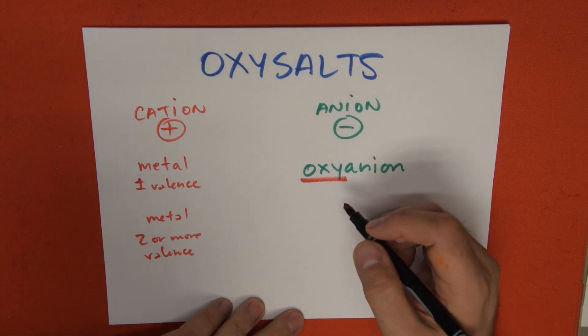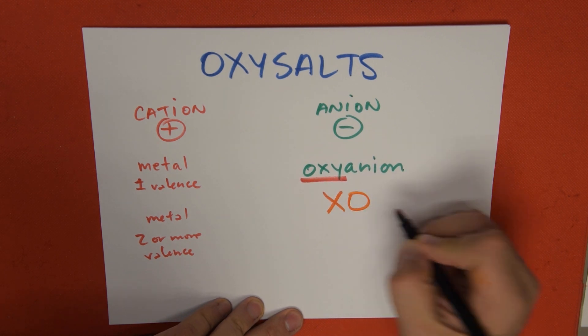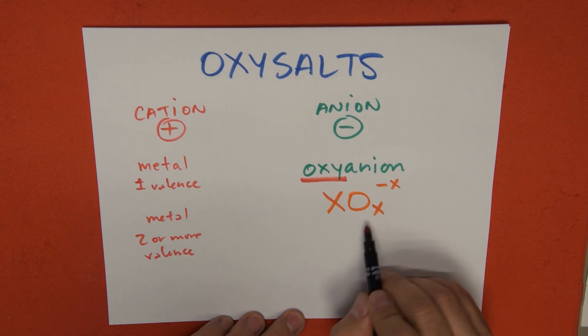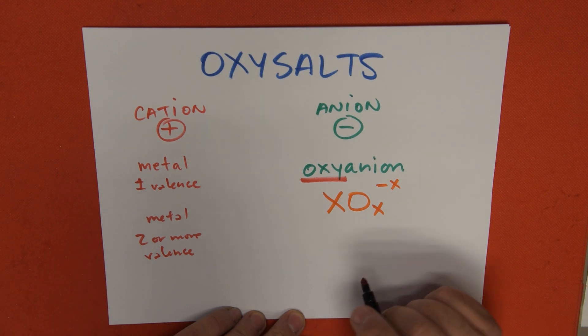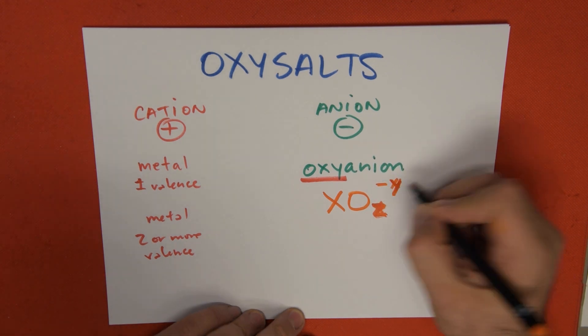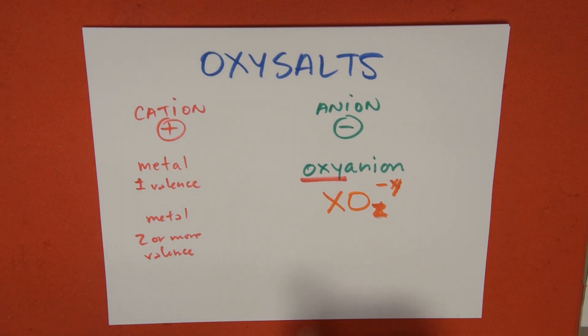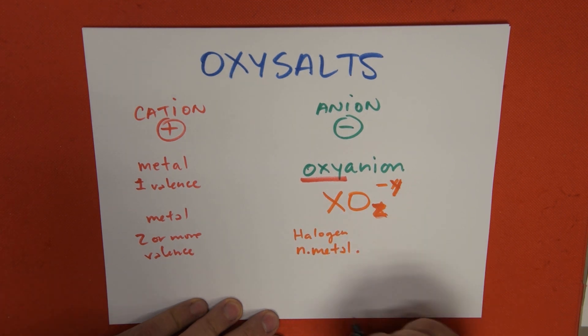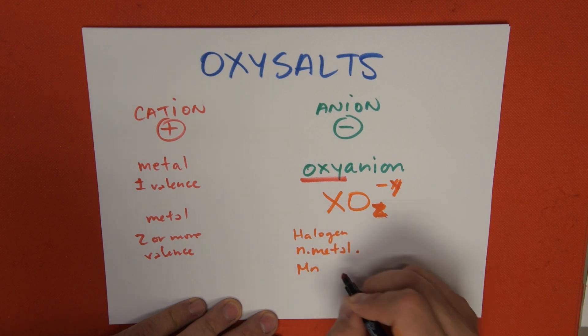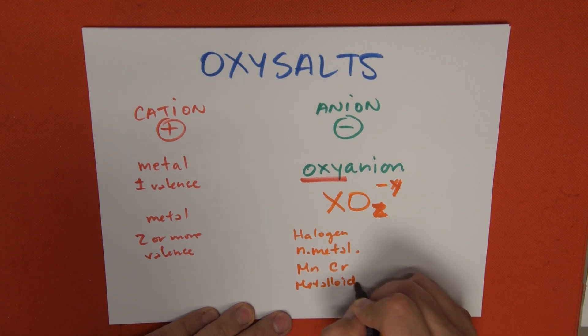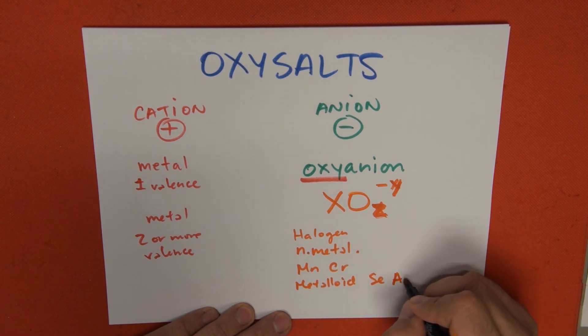So oxyanions usually follow the formula XOZ with a specific charge of Y. This doesn't mean all of the numbers are the same, they're different. What are some of the values that X can have? X can be a halogen, or any non-metal particularly, or some specific metals such as manganese, chromium, or maybe even some metalloids such as selenium or arsenic.